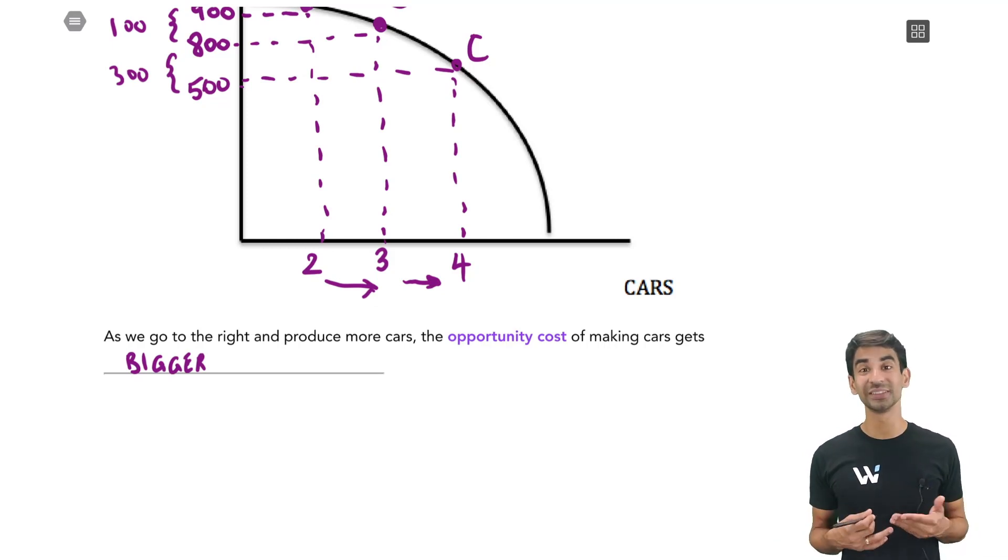And that is also called increasing opportunity cost. So increasing opportunity cost is why the PPF is concave, that shape. It starts off flat and then it gets steeper, steeper, steeper.